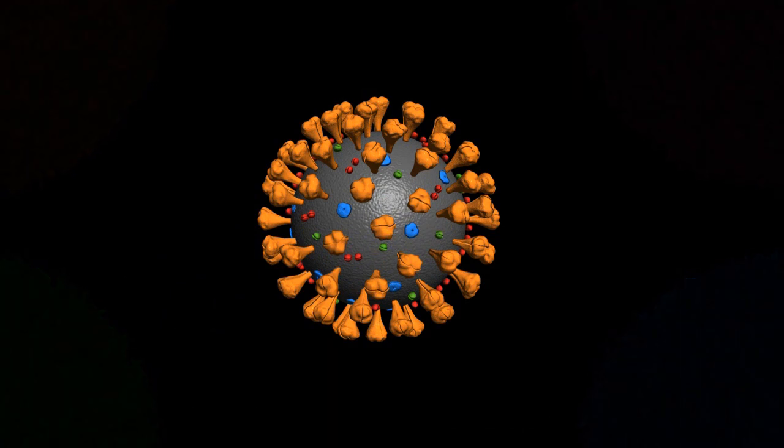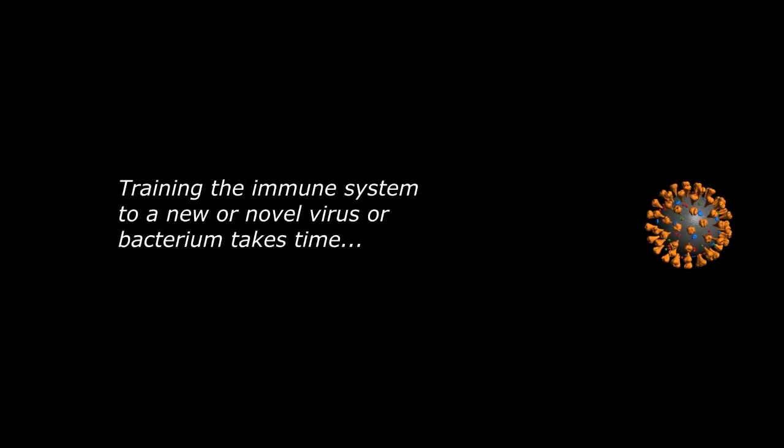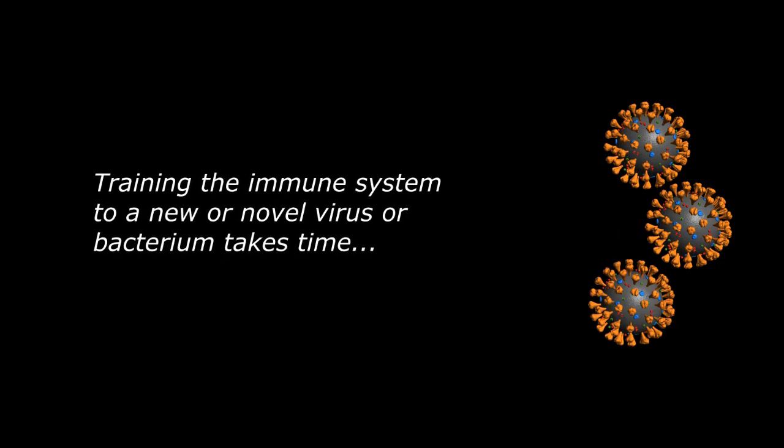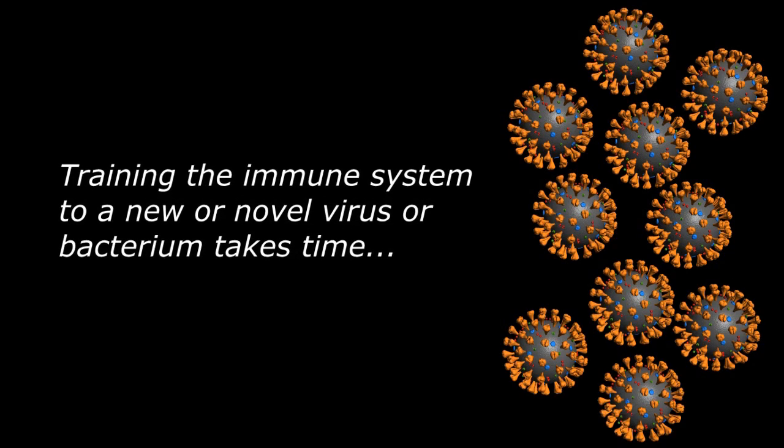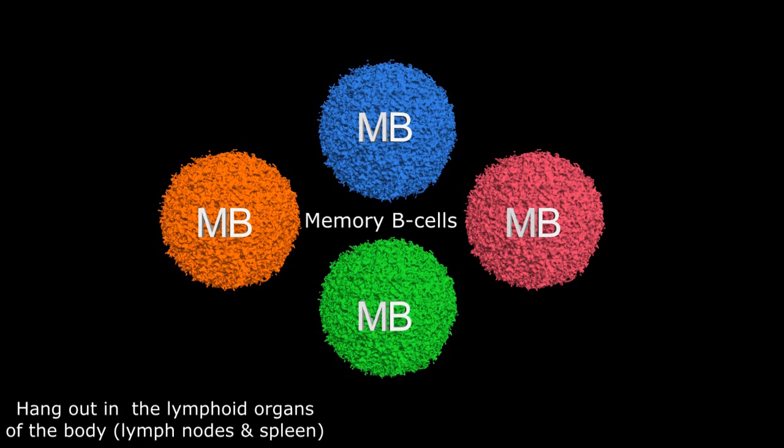With a new or novel pathogen, this leukocyte training process takes time, during which the virus or bacterium continues to multiply and infect other cells of the body, sickening or killing the host in the process. This is where the memory B cells come into play. Hanging out in the lymphoid organs of the body like the lymph nodes and spleen, the B cells can be quickly mobilized into antibody producing plasma cells if a new infection from the same virus or bacterium is encountered in the future.